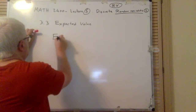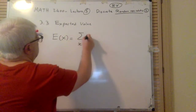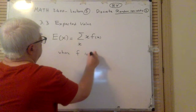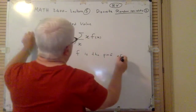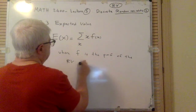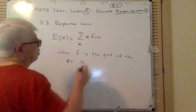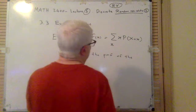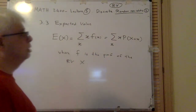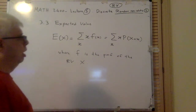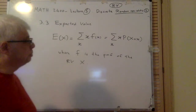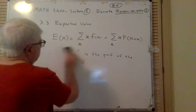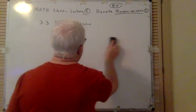The expected value of X is defined as sigma over small x of x times f(x), where f is the PMF of the random variable X. You can also write it as a sum where f(x) is in fact the probability that the random variable X equals x.